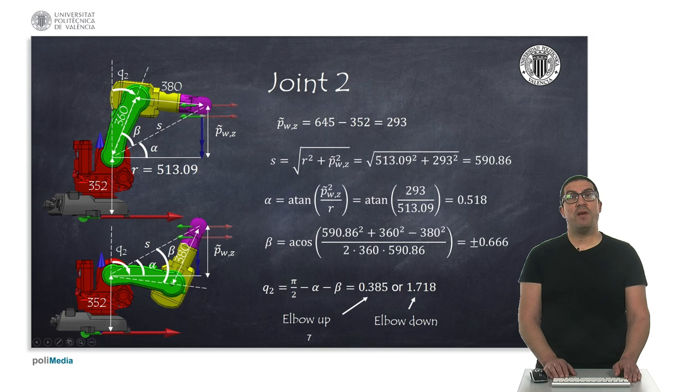In order to obtain the value for the second joint, we must consider now the relative position of the wrist point with respect to the coordinate of the first link, the point where the second joint rotates.